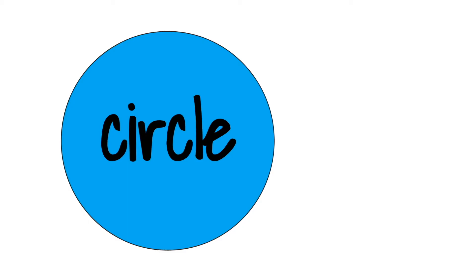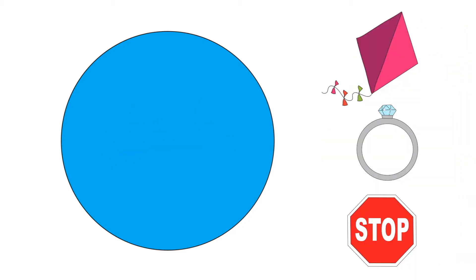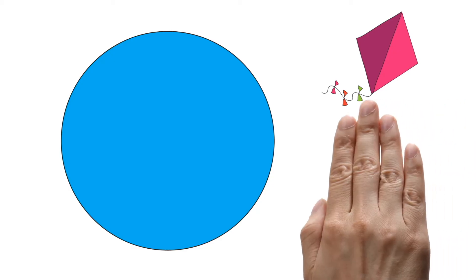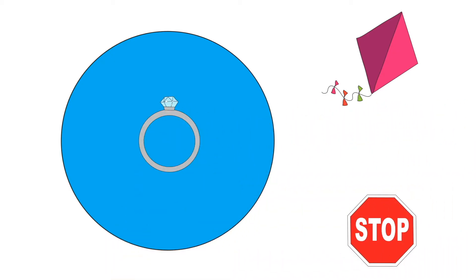This is a circle. Can you see an object that is shaped like a circle? A ring is shaped like a circle. Circle.